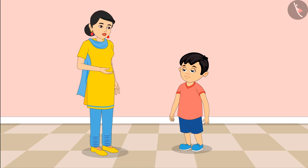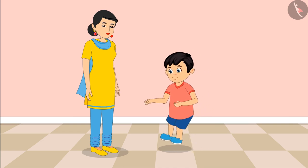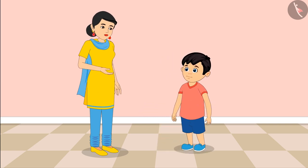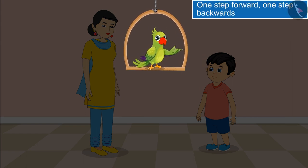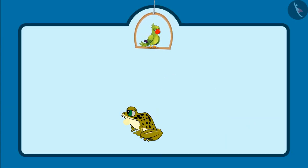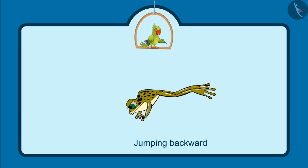Mom asks: Can you jump a step forward from where you are standing right now? Jhotu does so. Mom says: Wow Jhotu, now jump a step backwards! Well done Jhotu! Kids, did you see how Jhotu jumped a step forward and then backwards? Can you tell whether this frog is jumping forward or backwards? Yes, you are absolutely right — this frog is jumping forward, and this is called jumping backwards.